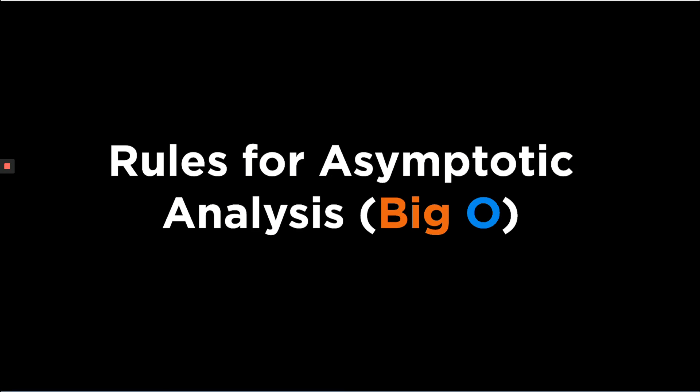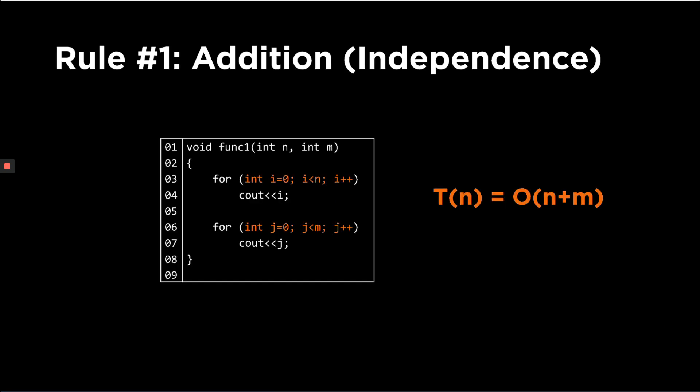In this last video we are going to discuss the rules for asymptotic analysis. These rules are followed for most asymptotic functions including Big O. The first rule is the rule of addition or independence. What this rule says is if there are multiple snippets of code which are independent of each other in your program, the total complexity is the sum of all the individual snippets.